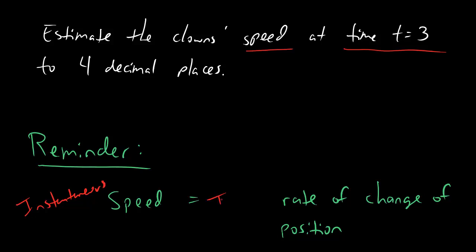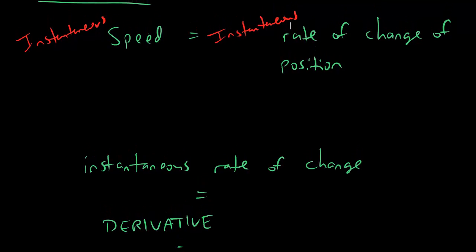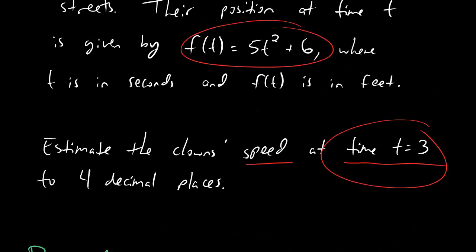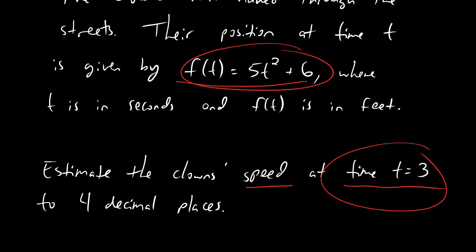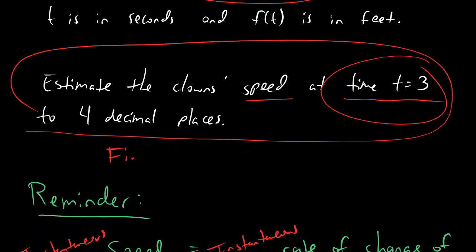So this is instantaneous speed. And instantaneous speed is the same thing as instantaneous rate of change of position. And instantaneous rate of change means the same thing as derivative. So basically what they're asking us for here is not just any speed, it's an instantaneous speed. And because it's an instantaneous speed, then it basically means we're finding the derivative of our original function f at the time three. So the gist of all of this is basically saying find f prime of three. Find the derivative of the function f at the point three.